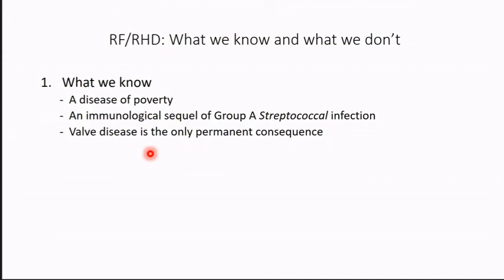It's a disease of poverty, present in poor pockets of both rich and poor countries. It's an immunologic sequel to a group A streptococcal infection of the throat. Somebody gets a sore throat, some of them get acute rheumatic fever, and then they go on to develop rheumatic heart disease. Although other manifestations like arthritis occur during acute rheumatic fever, they are evanescent — the only permanent sequel is the valve disease.